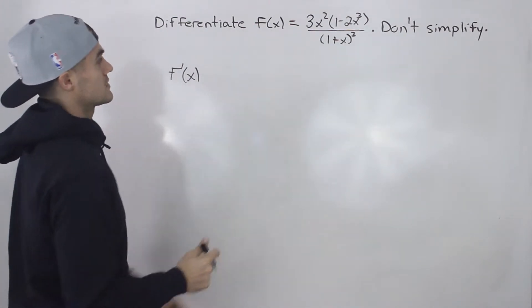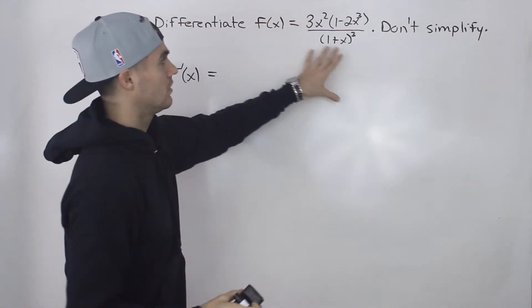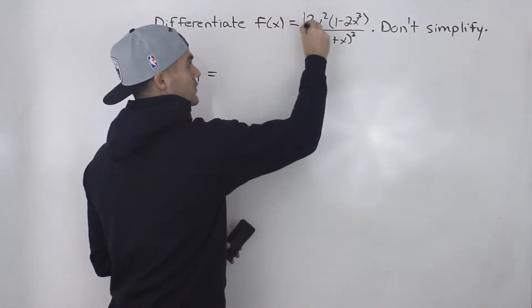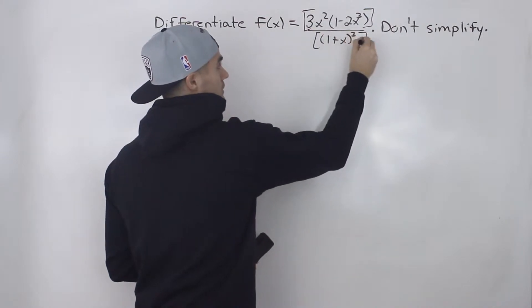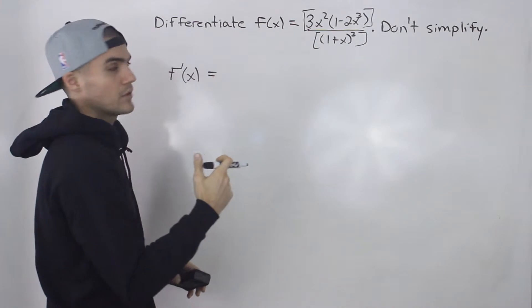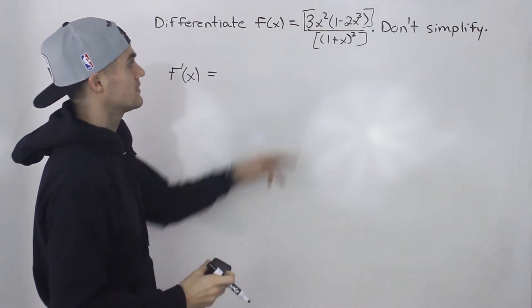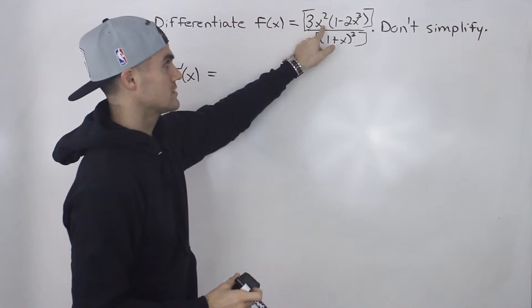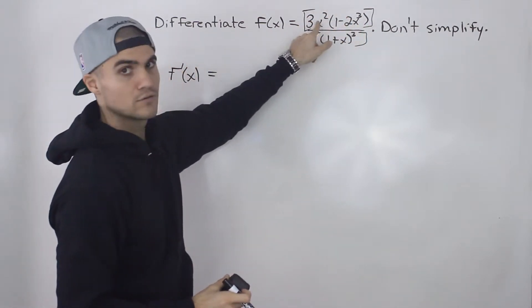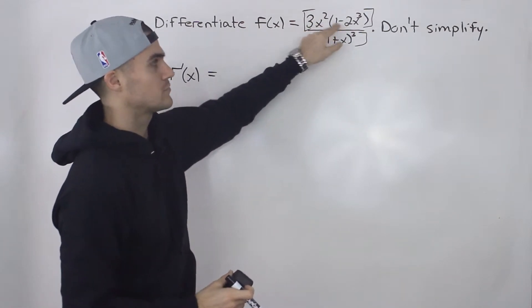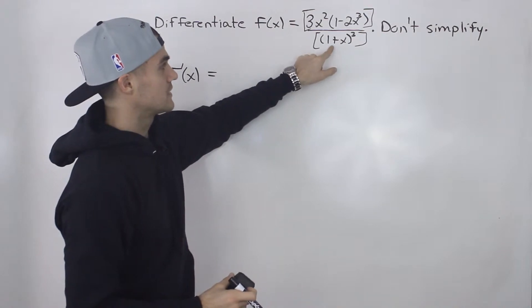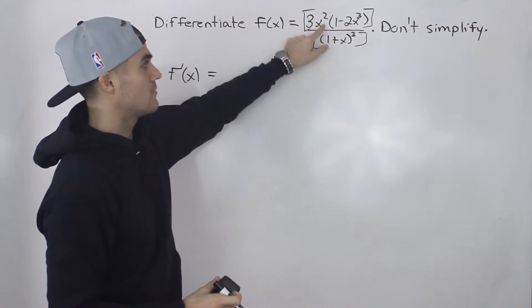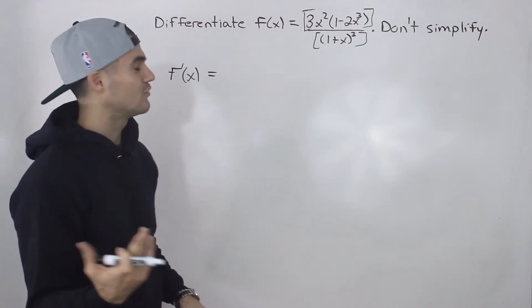So how are we going to differentiate this? Well, first thing to realize is that overall this function is one function divided by another — a function in the numerator over another function in the denominator. So the first step is to apply the quotient rule. This is a rational function. Then the function in the numerator is the product of two functions, so when we take the derivative of that numerator within the quotient rule, we're going to have to apply the product rule. And when we take the derivative of the denominator, notice that's a composite function, so we're going to apply the chain rule there. So we apply the product rule and the chain rule within the quotient rule.